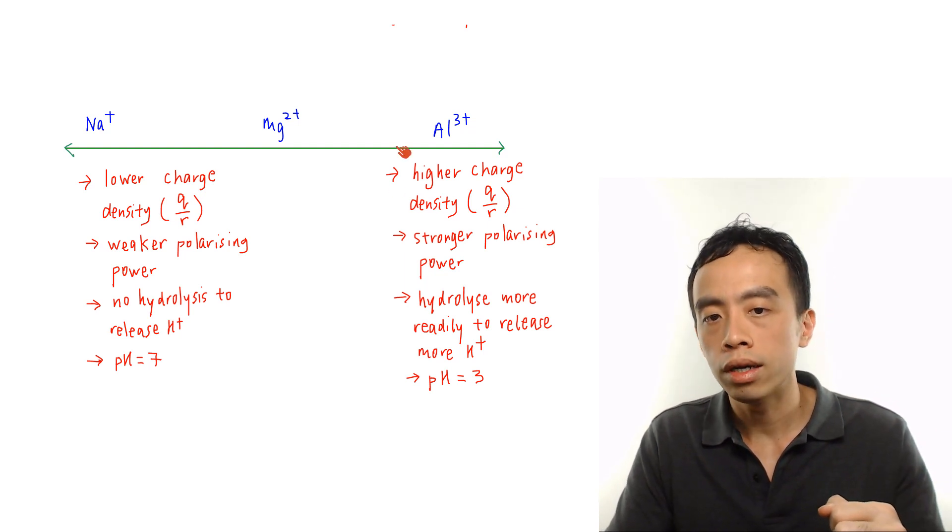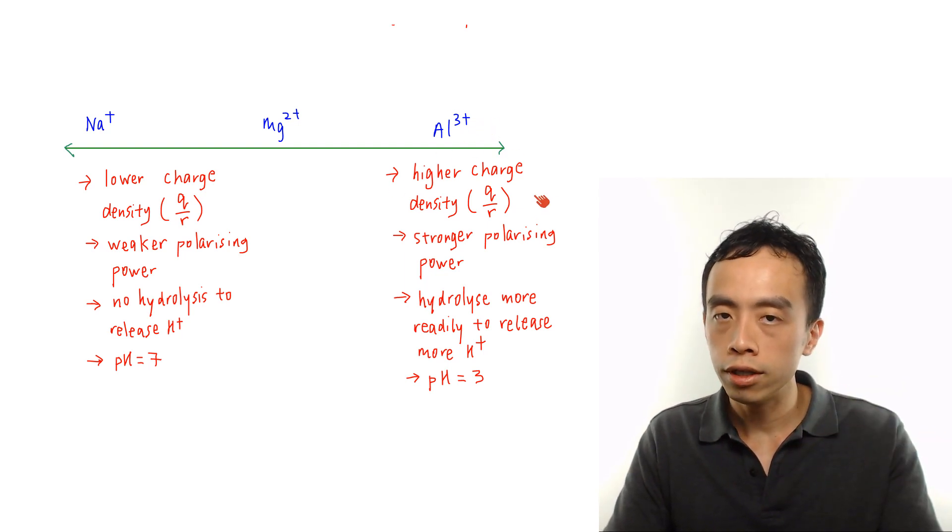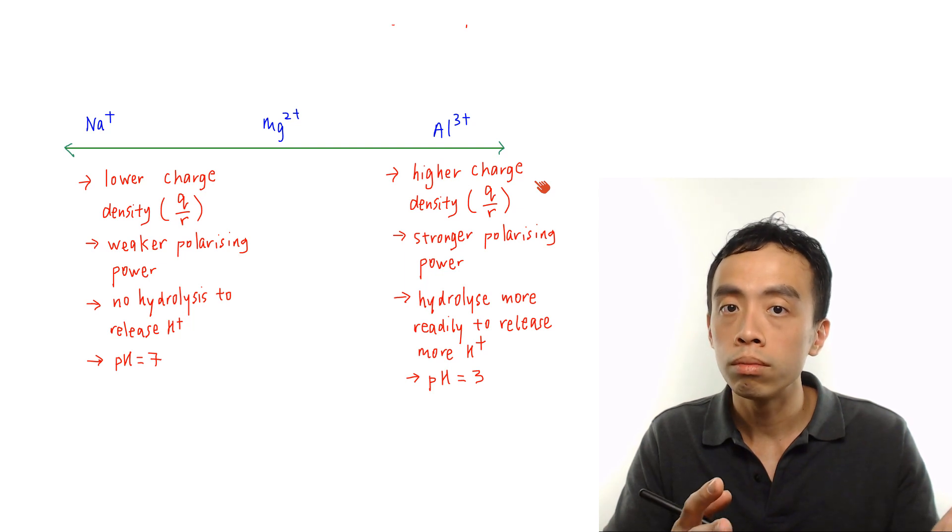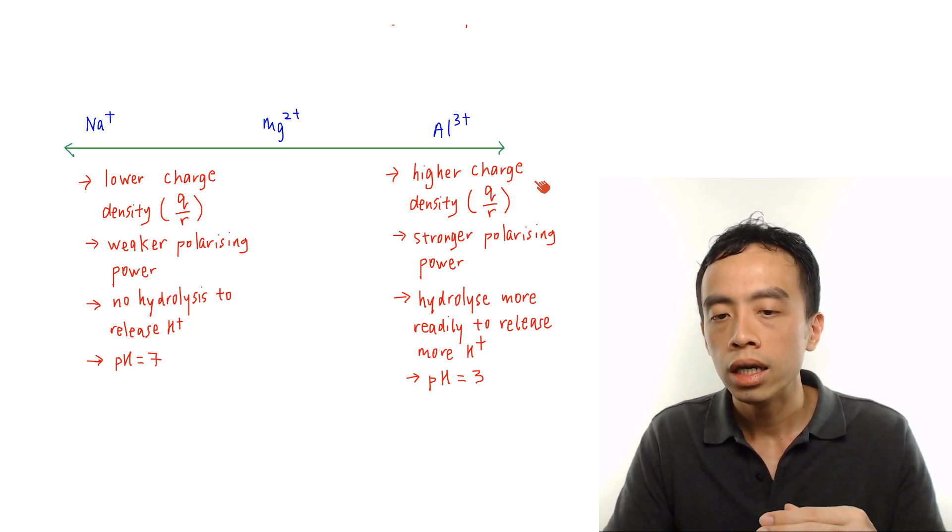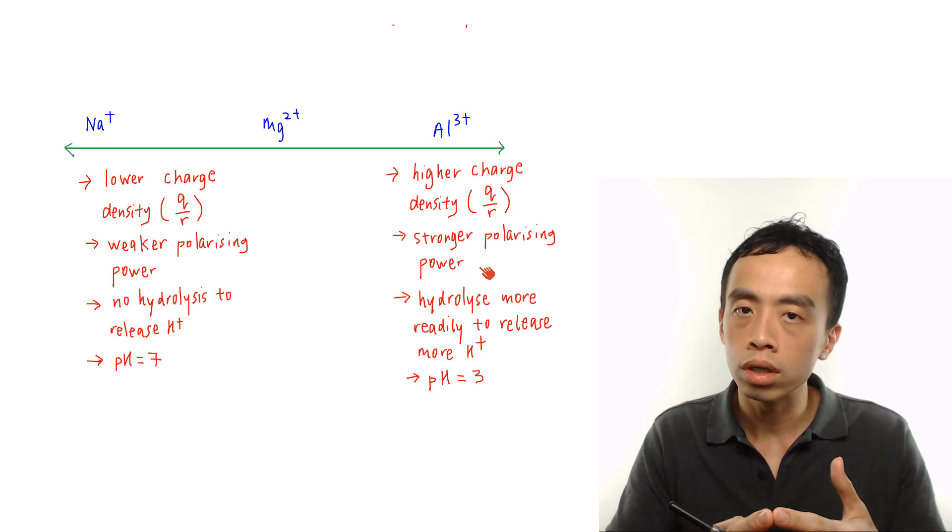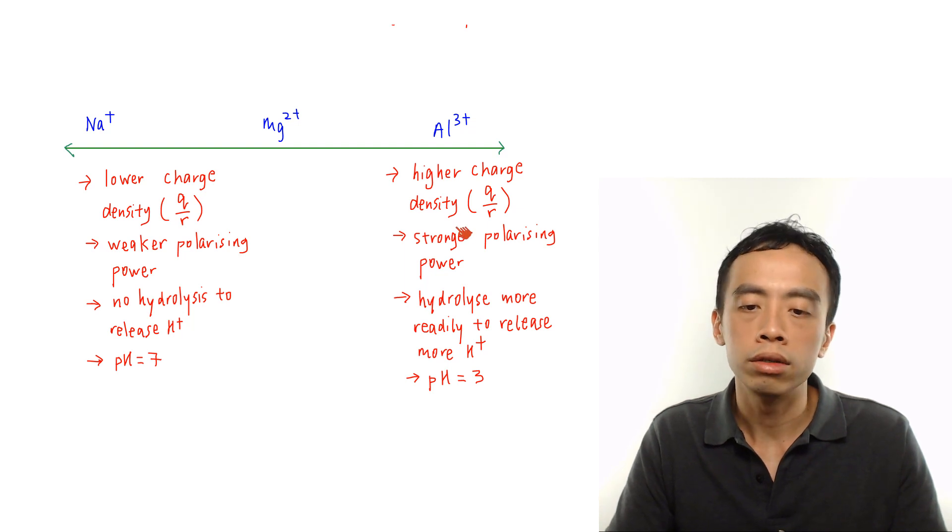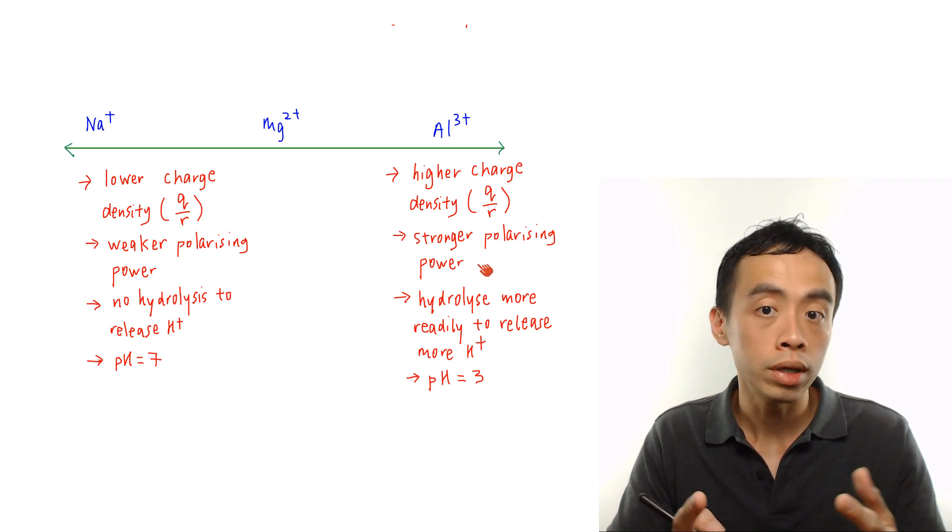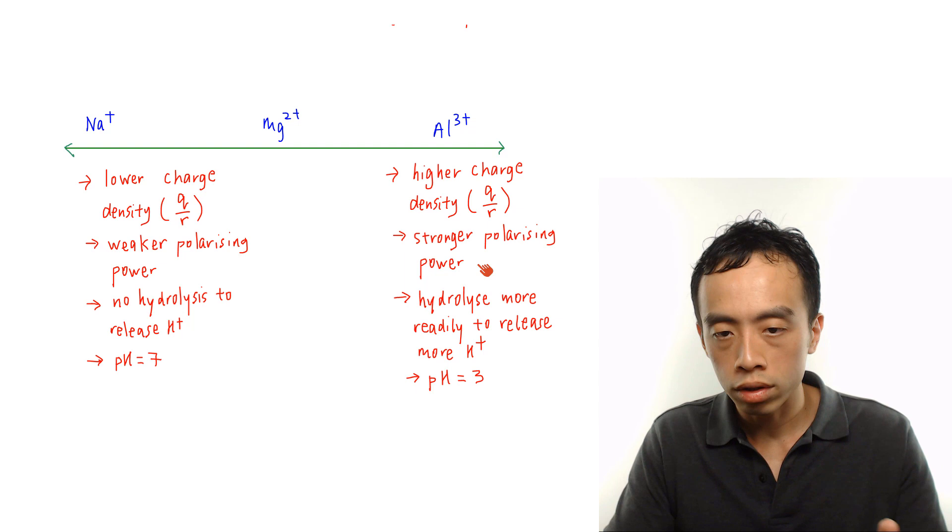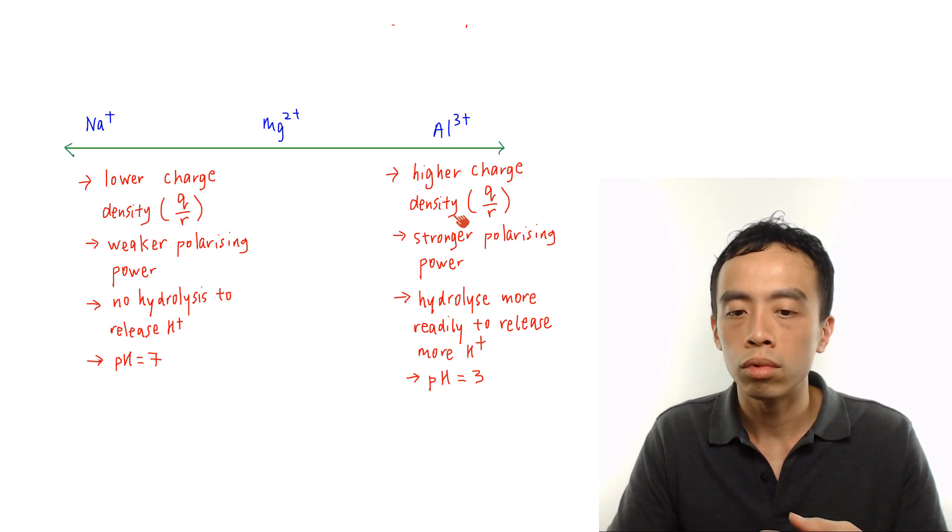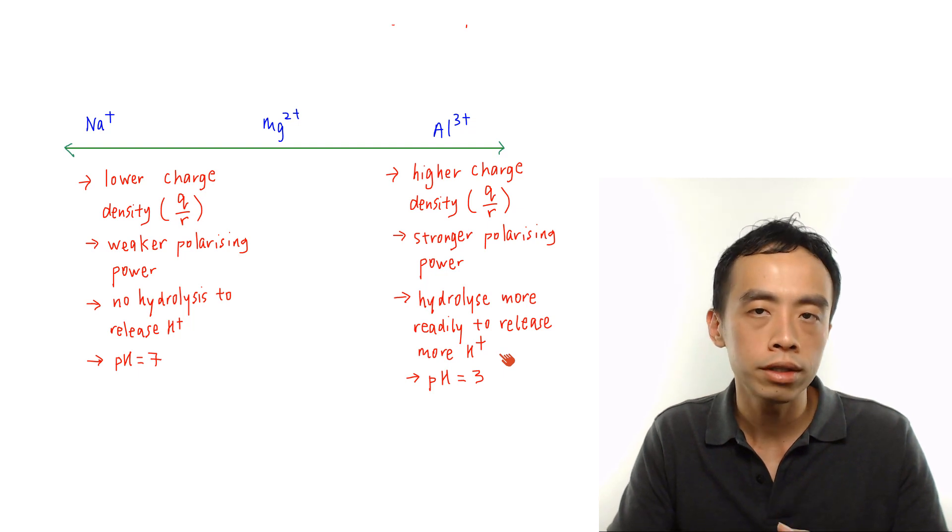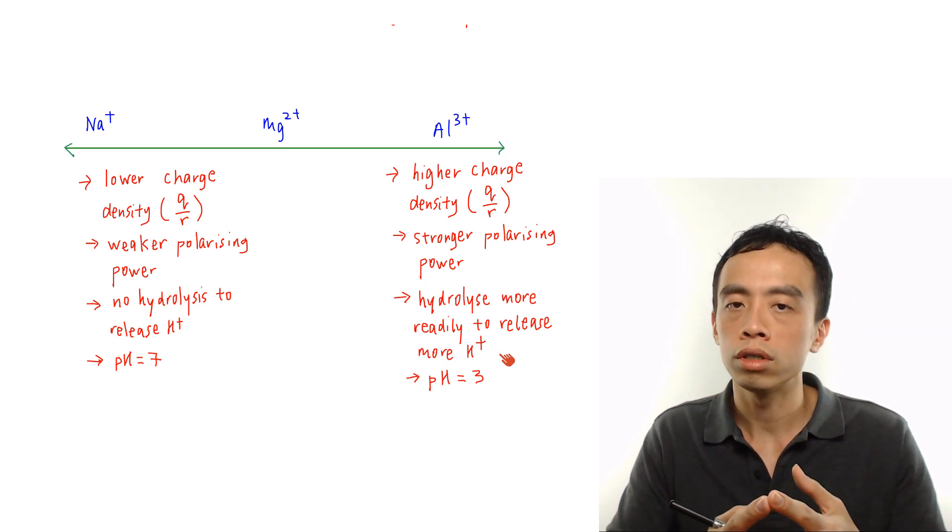Whereas on the other hand if I look at Al3+, it has a higher charge density, so therefore it is the most polarizing for this set. If it is more polarizing or it has a stronger polarizing power, it can distort the electron cloud for water to a bigger extent, weaken the bonds in water, so OH bonds will break more readily, hydrolyze more readily to release more H+, so it causes the pH of the solution to decrease.